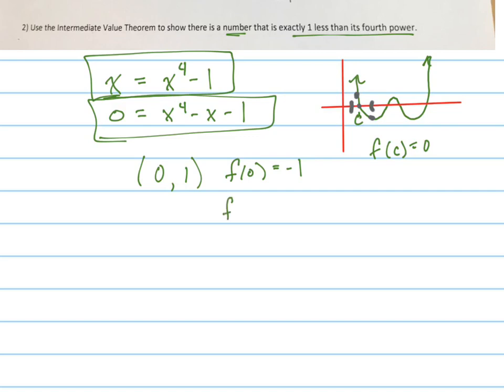Okay. So if I try F of zero is negative one, and F of one is also negative one, right? So that doesn't work. Let's try another one. How about negative one and positive one?